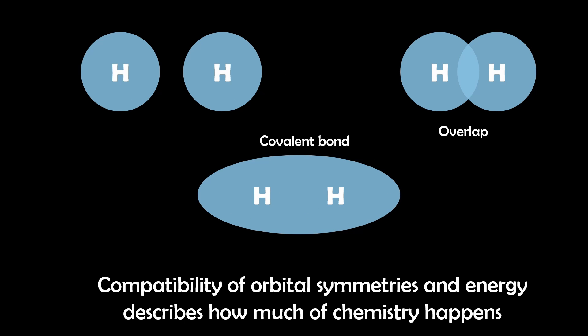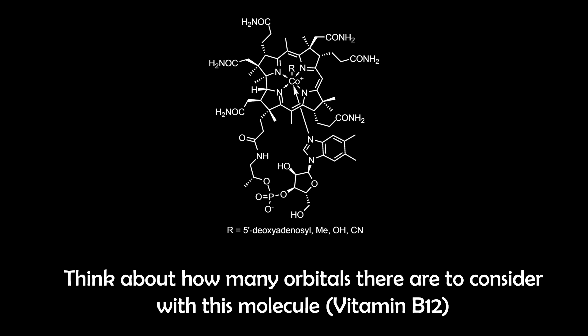And compatibility of orbital symmetries and energies, very simplistically, describes much of how chemistry actually works and happens. But in reality, large molecular structures, orbital distortions, and system energies have to be considered, which is why it's not just as easy as saying these symmetries are compatible, therefore these molecules will bond. Nonetheless, it provides an invaluable foundation for understanding atomic and molecular interactions in chemistry.